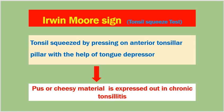Dear students, Namaste. Today I shall be discussing Irwin's sign and other features of chronic tonsillitis. As you know, in most conditions we have recurrent acute tonsillitis or acute exacerbation of recurrent tonsillitis. Chronic tonsillitis is not very common, but occasionally a patient may have chronic infection of the tonsils. This is diagnosed by Irwin's sign, which is also called the Tonsil Squeeze Test.